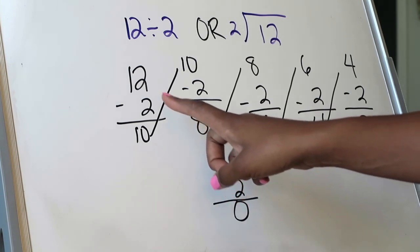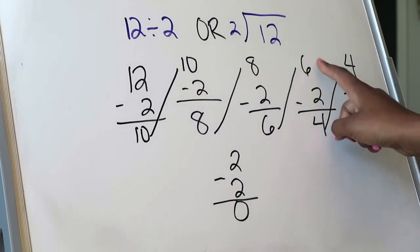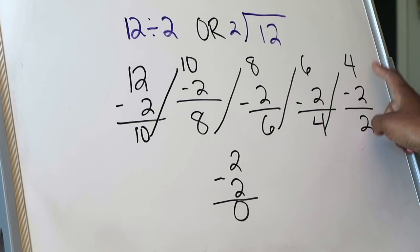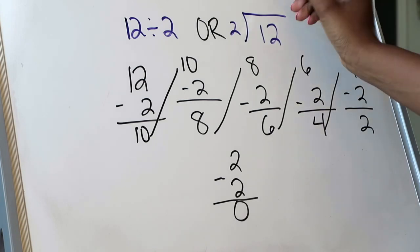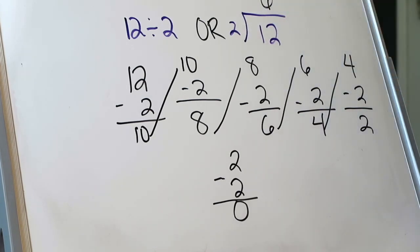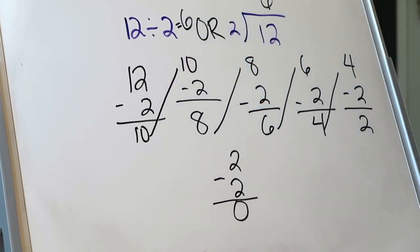I subtracted a total of 1, 2, 3, 4, 5, 6 times. So based on that, the quotient for 12 divided by 2 is going to be 6. I would write that on top of the division house, or if it was presented the other way, I would write my quotient just like that. So that's the first example.